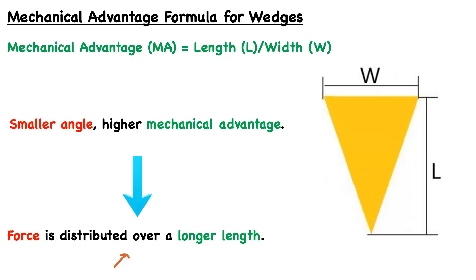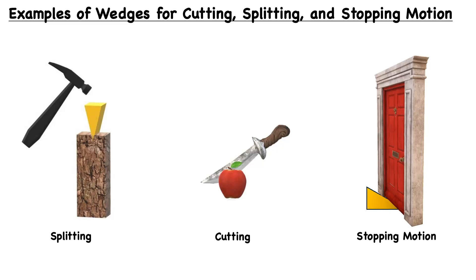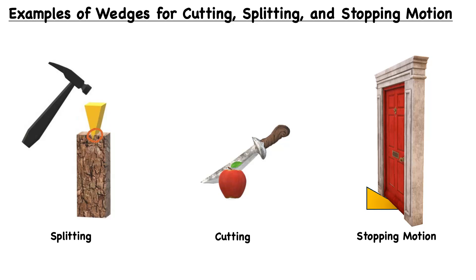There are many different applications of a wedge, and we can talk about three of them: cutting, splitting, and stopping motion. In splitting — for example, splitting a piece of wood — a wedge is used in its most traditional sense. We have the cutting or penetrating edge, which has a very high pressure, and it's used to actually penetrate into the surface of the material.